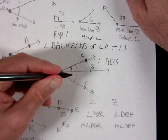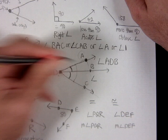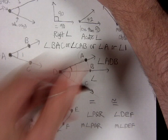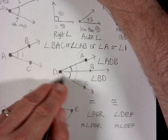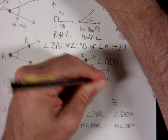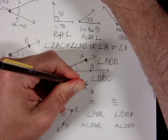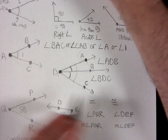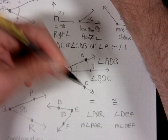To name the bottom angle, I use the angle symbol and start with a point on one side — B — then the vertex D — then a point on the other side — C. So angle BDC is the correct name. You could also reverse it: angle CDB is the same angle.